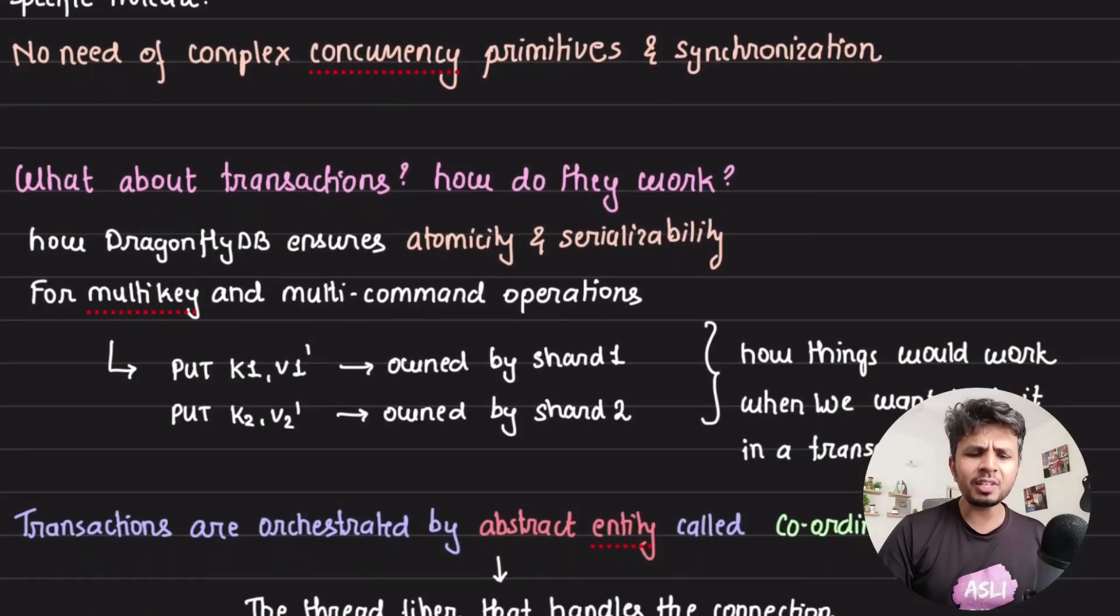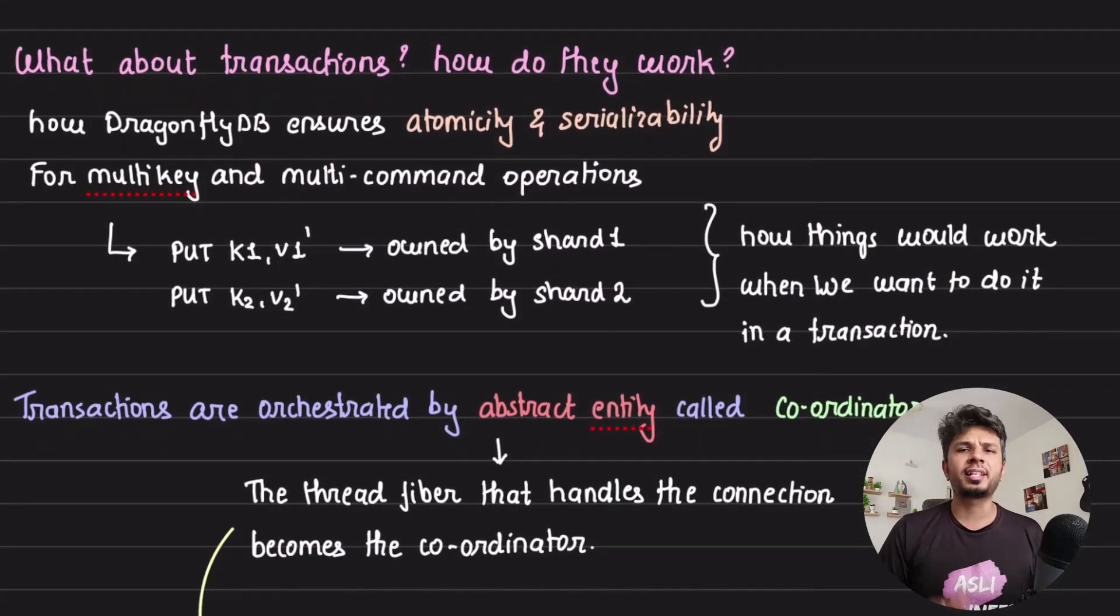First thing first, what do we need from transactions? From transactions, we need two things: atomicity and serializability.